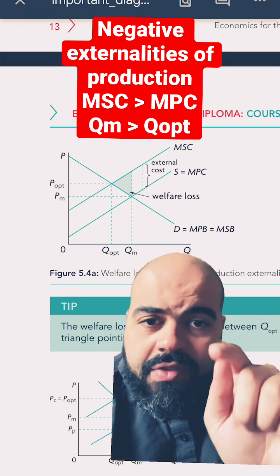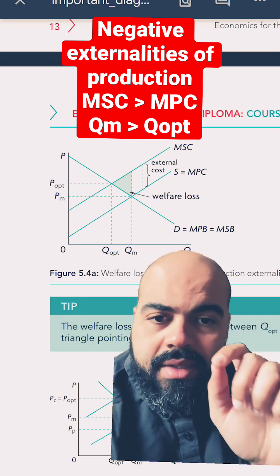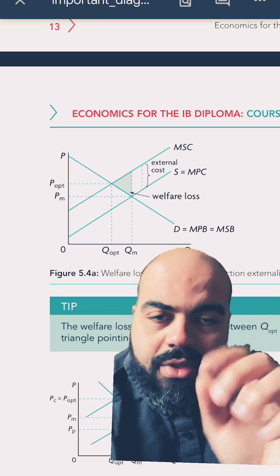The intersection of the MPC and the MPB gives us the market equilibrium. QM is the market quantity. PM is the market price.